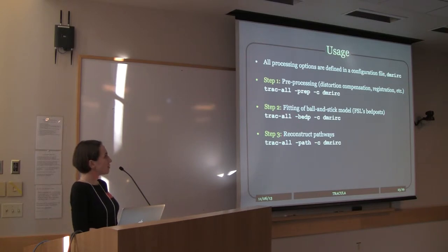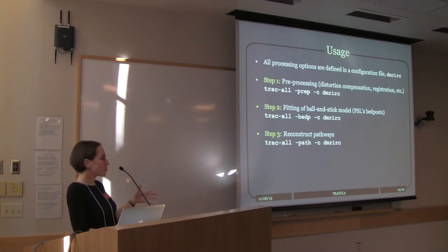For all these steps, you have to give it a configuration file that's a text file with all the different processing options. Instead of having multiple options arguments on the command line, you have this file where you define all the parameters of the pre-processing and reconstruction, and then the same parameters are applied to reconstruct the tracks in all of your subjects.